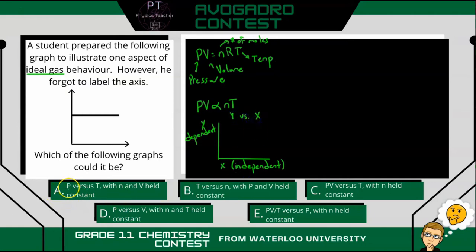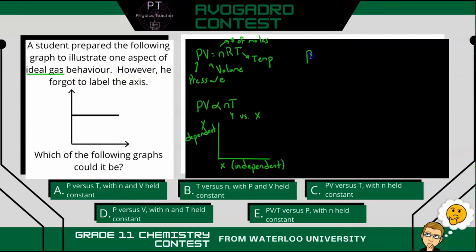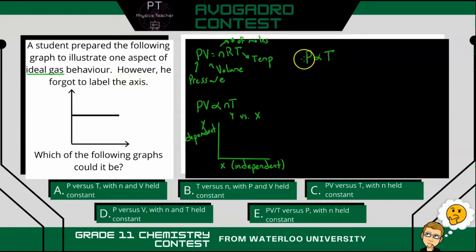For part A, it says P versus T — pressure versus temperature. As temperature changes, what happens to pressure? With n and V held constant, we just have pressure proportional to temperature. So as temperature increases, pressure increases, because they are directly proportional to each other. Your graph would look like a straight line — not the one we're looking for, so it's not A.